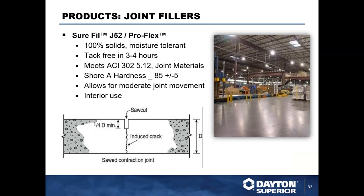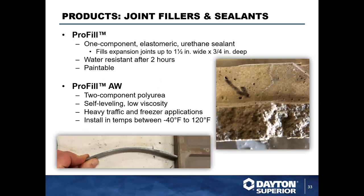J52 Pro Flex Sure Fill J52 is 100% solids, moisture tolerant, tack-free in two to three hours, meets ACI 302 Section 5.12 for joint material, with a Shore hardness of approximately 85, allowing for moderate movement within the floor slab. Pro Fill is a one-component elastomeric urethane sealant that fills expansion joints up to 1.5 inches wide by 3/4 inch deep, water resistant after two hours, and paintable.